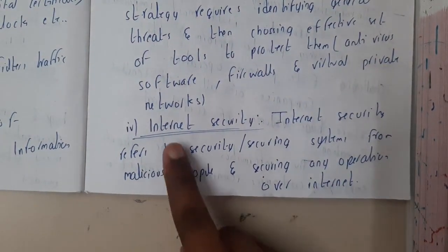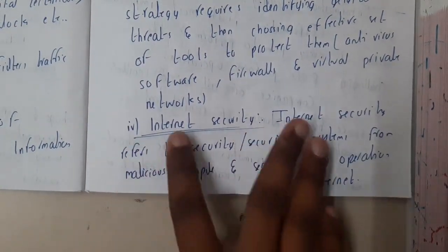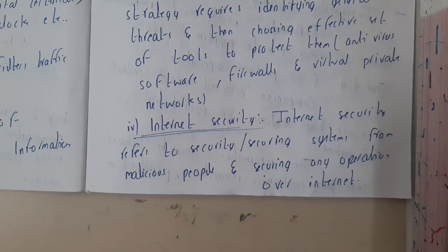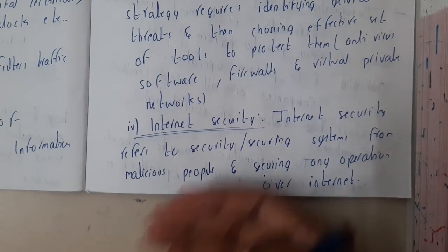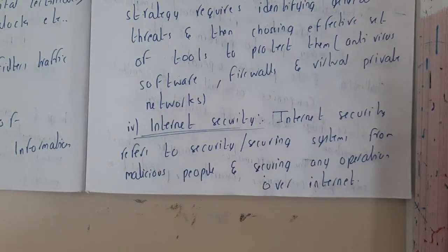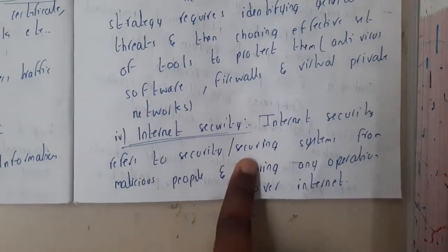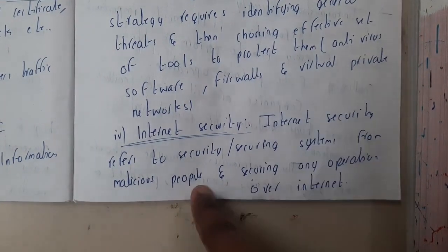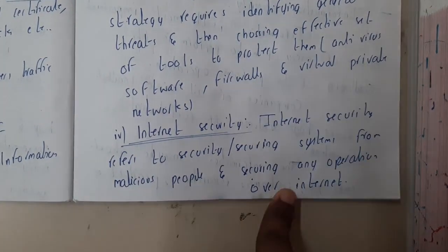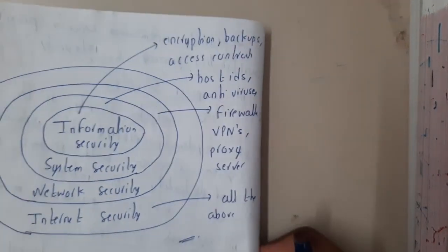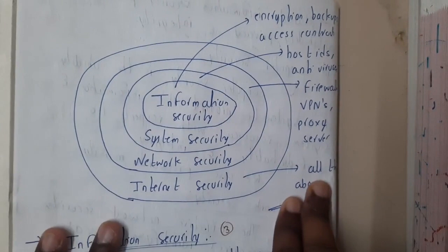The next type is internet security. Whenever you visit a website, you check whether it is secured or not — HTTPS or HTTP. We also use VPNs. Internet security refers to securing the system from malicious people and securing any operation over the internet, trying to make everything you do in a secure way.